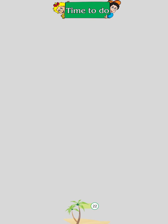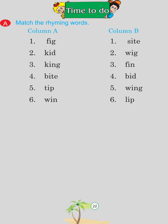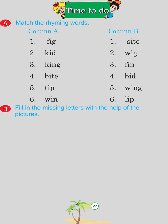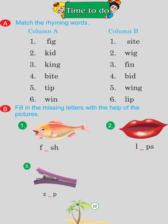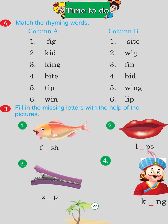Time to do. Match the rhyming words — Column A, Column B: Fig/Wig, Kid/Bid, King/Wing, Bite/Sight, Tip/Lip, Win/Fin. Fill in the missing letters with the help of the pictures: Fish, Clips, Zip, King.